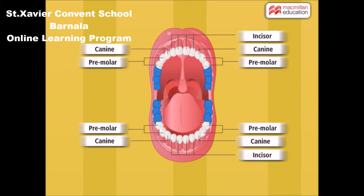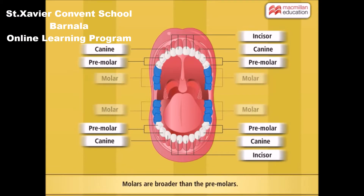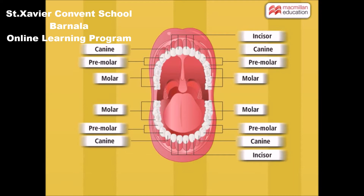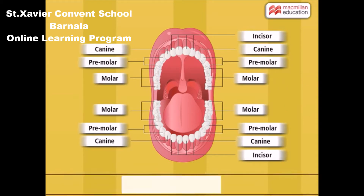Look at the last three teeth on both sides of each jaw. On both sides of each jaw, the last three teeth are broader than the premolars. These are called molars. Their function is similar to the premolars, but they are used to grind the food further into a fine paste. We have in total 32 teeth, 16 in each jaw.